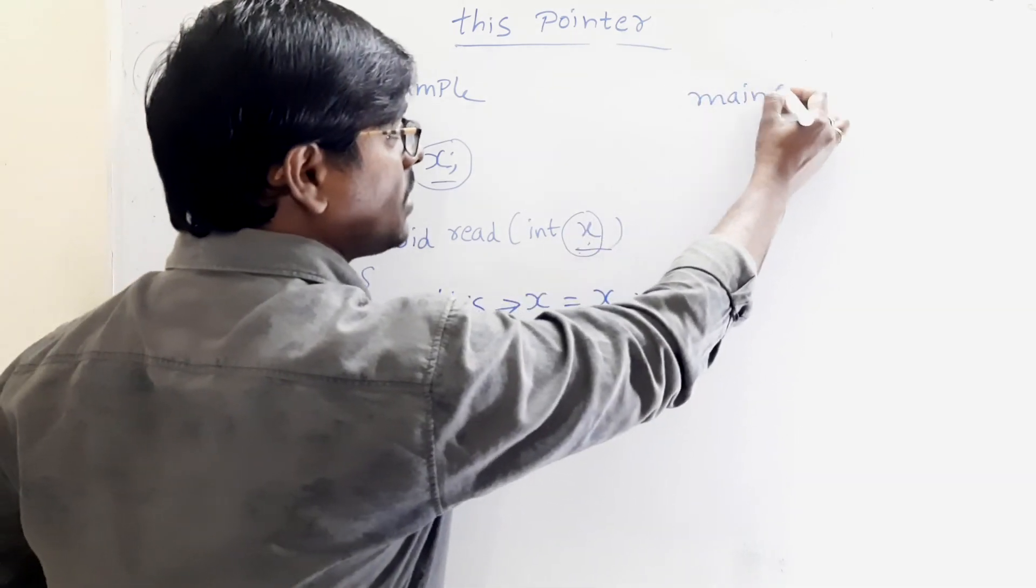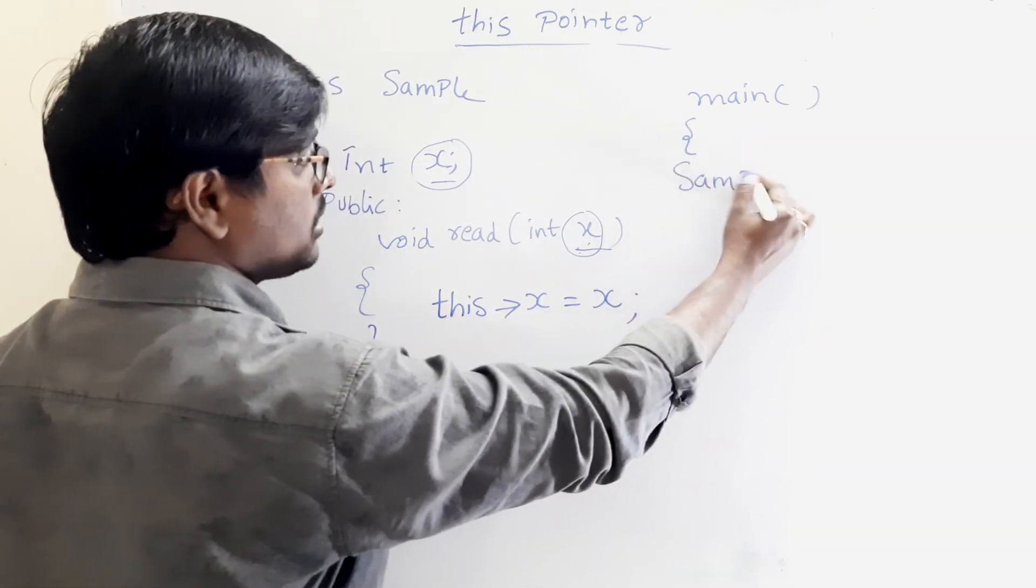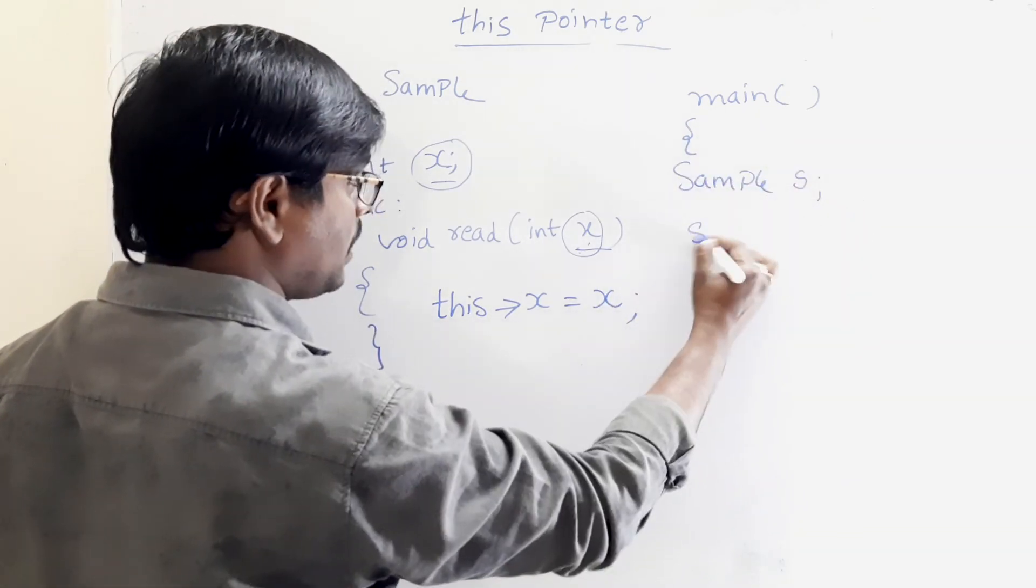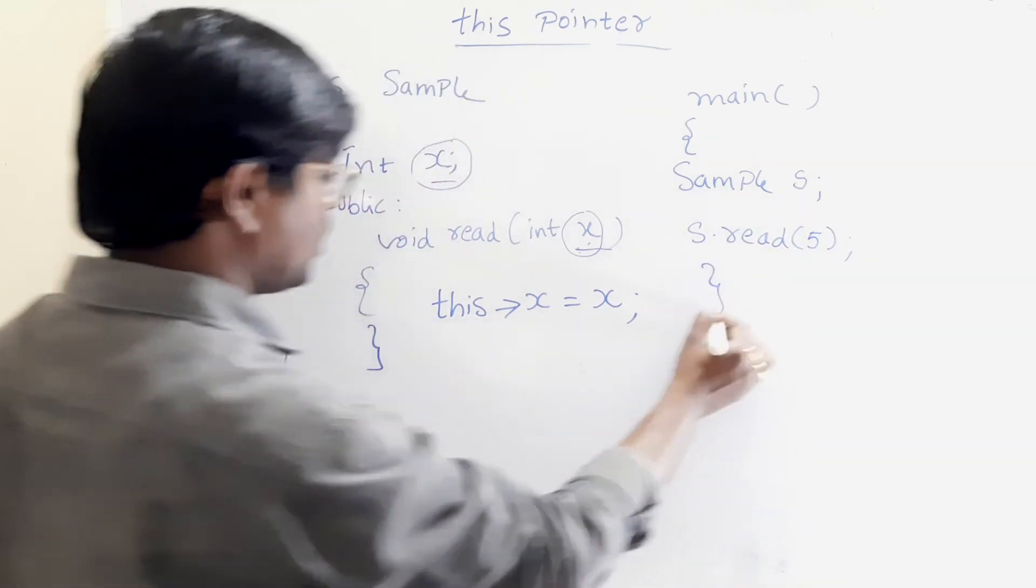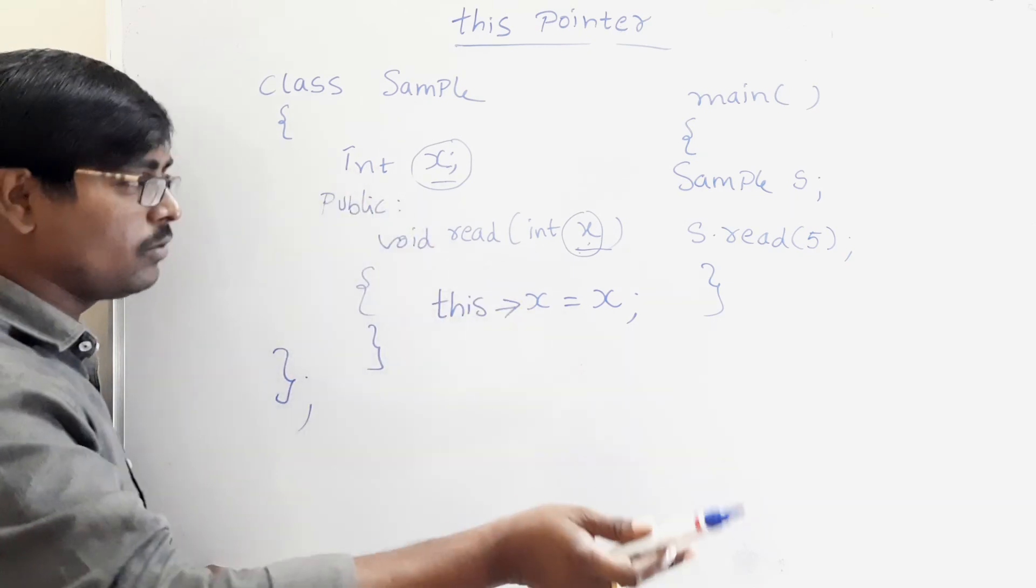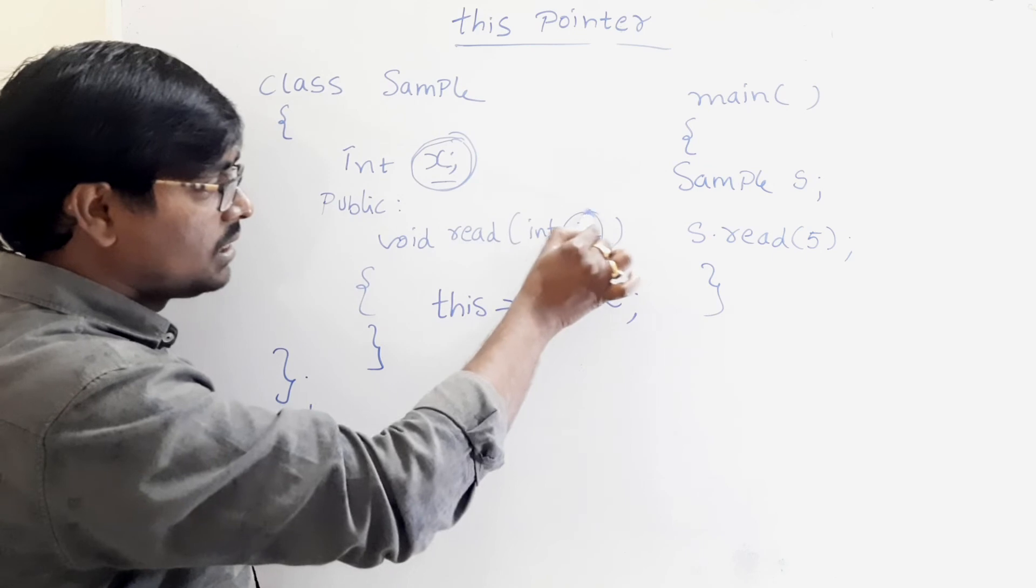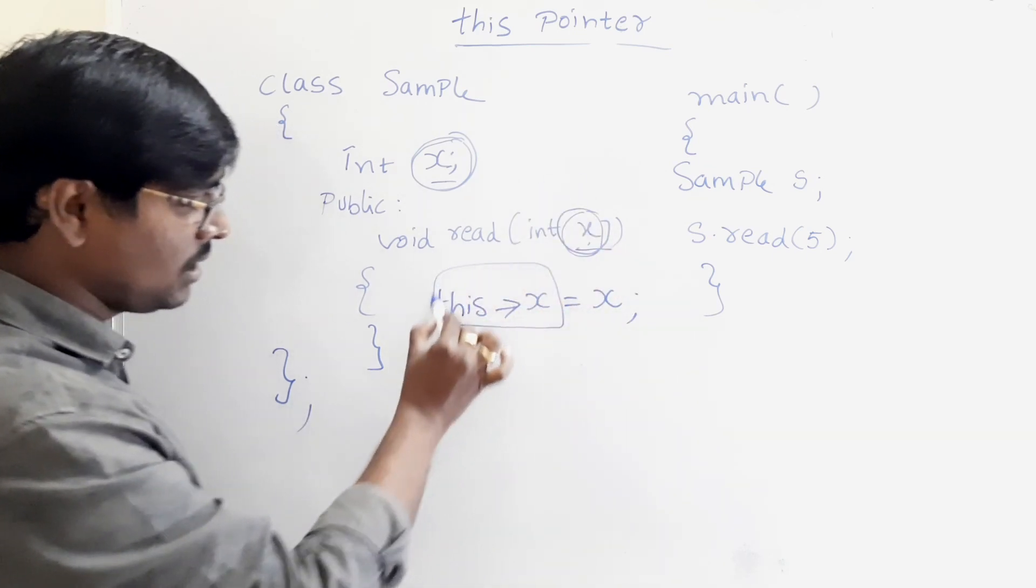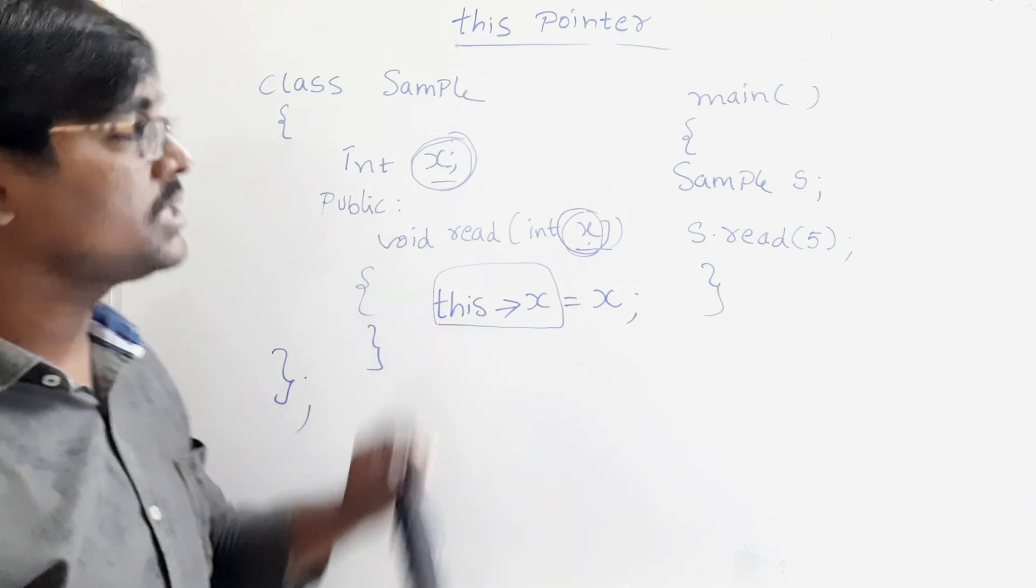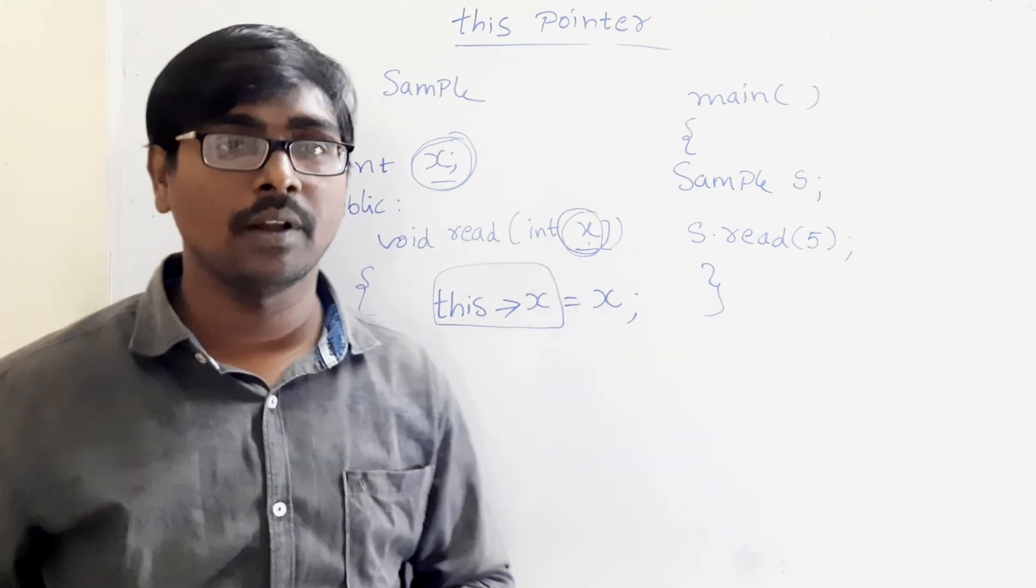And that procedure is same. In the main, we are creating an object, sample s, simply call x.3.5. So the only thing you have to write is, write and publish any program. Here, this name and this name must be same. For that case, we are using the scenario. This is one of the advantages of this pointer. Thank you.